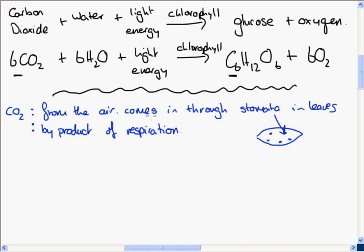The plant carries out another reaction called respiration, which is the opposite of photosynthesis. The plant produces carbon dioxide during respiration and holds on to that carbon dioxide, using it to carry out photosynthesis.